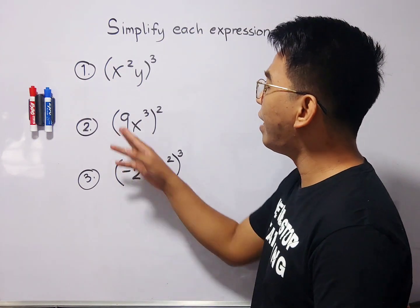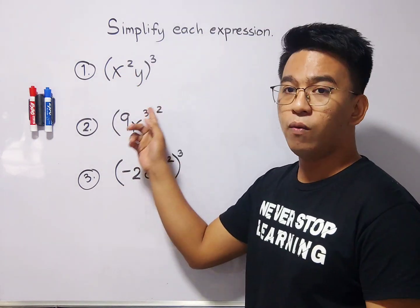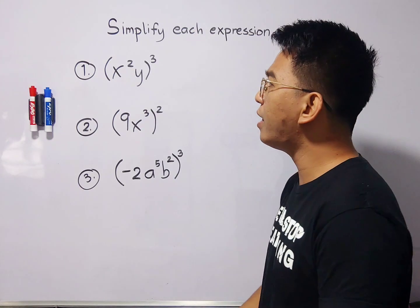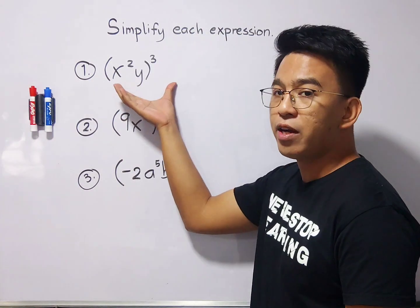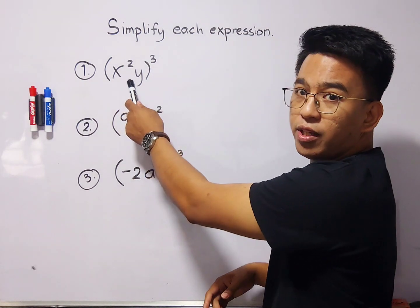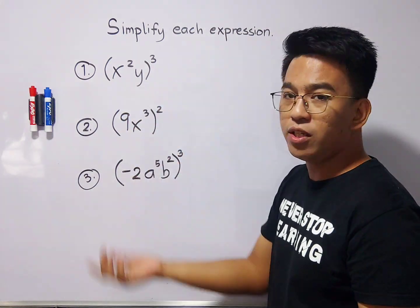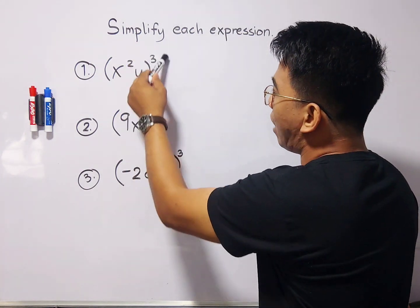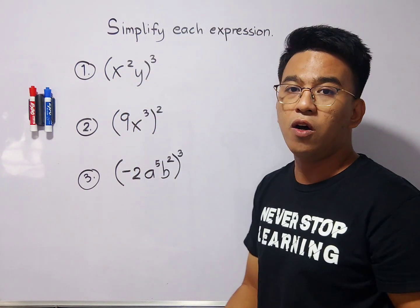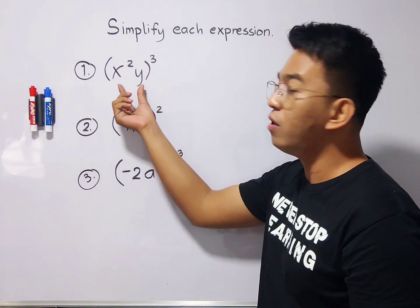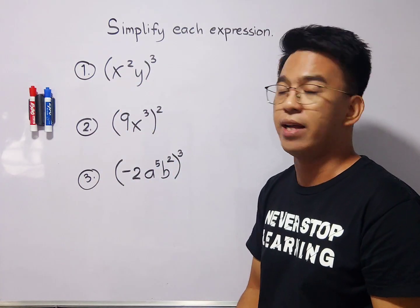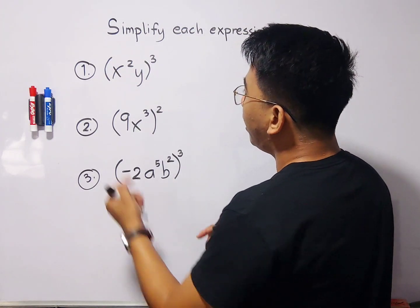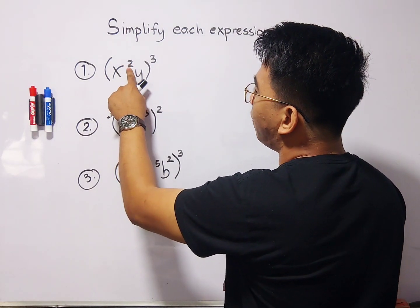What we have here is x squared times y, and then an exponent of 3 outside. Basically, if you have this kind of expression with an exponent outside the parentheses, what you need to do is multiply that outside exponent by the exponent of each variable or coefficient inside the parentheses.